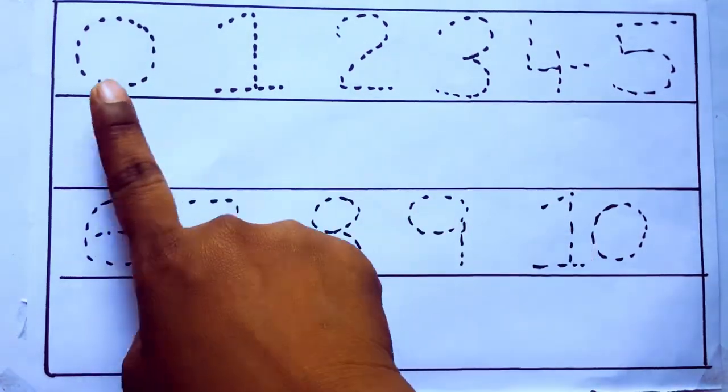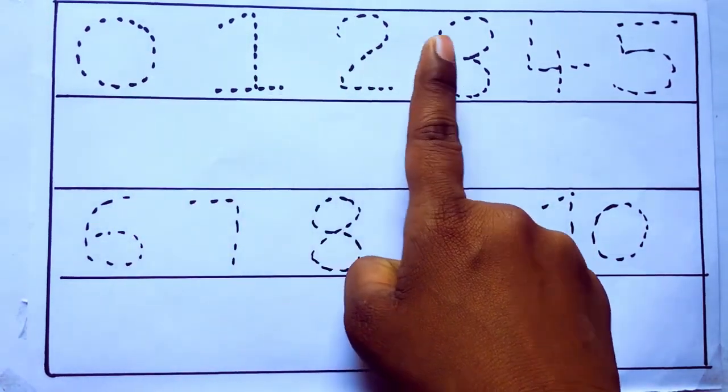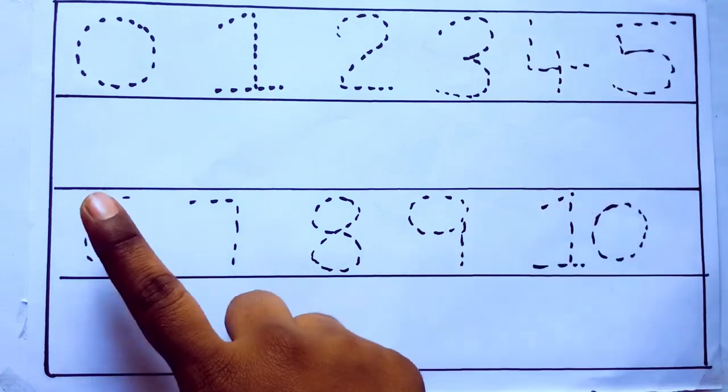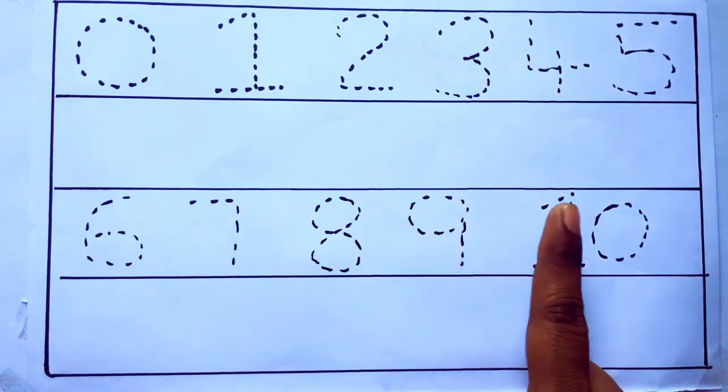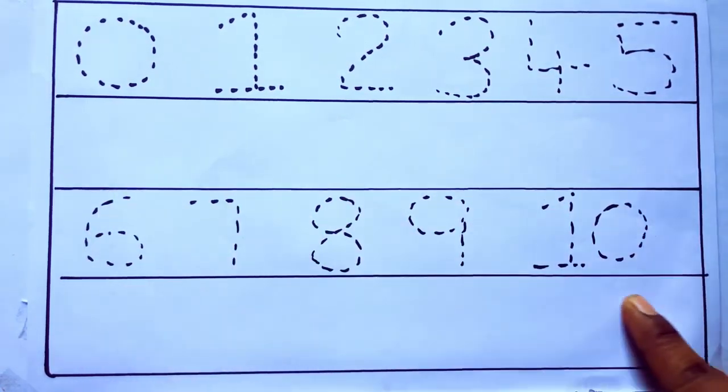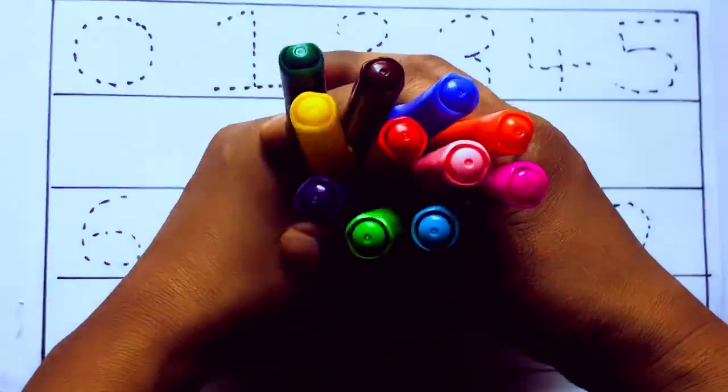0 to 10: 0, 1, 2, 3, 4, 5, 6, 7, 8, 9, 10 and rewriting the numbers. Let's learn some colors.